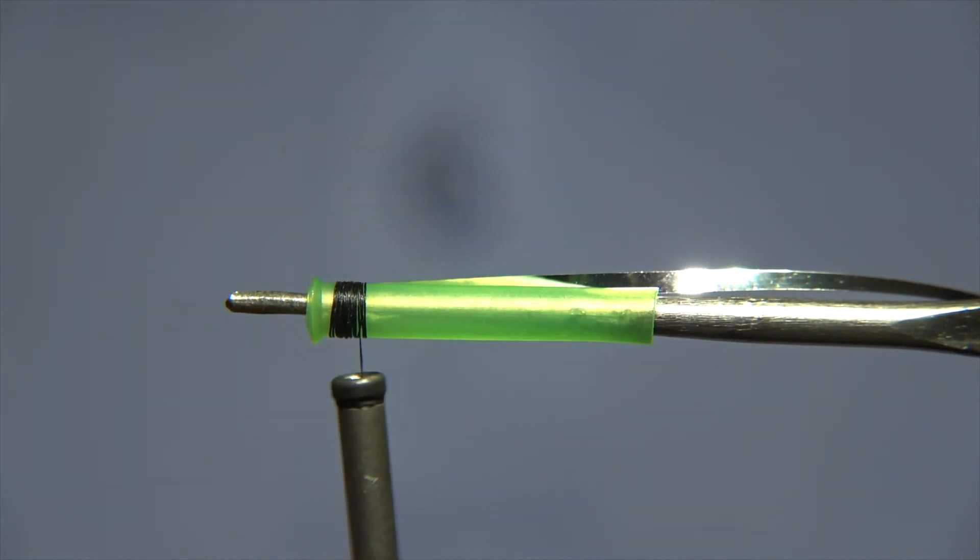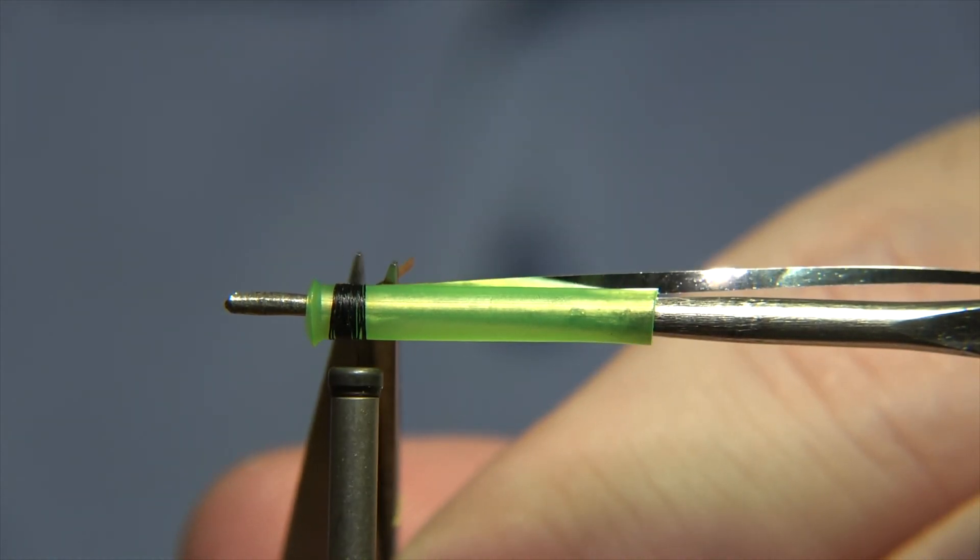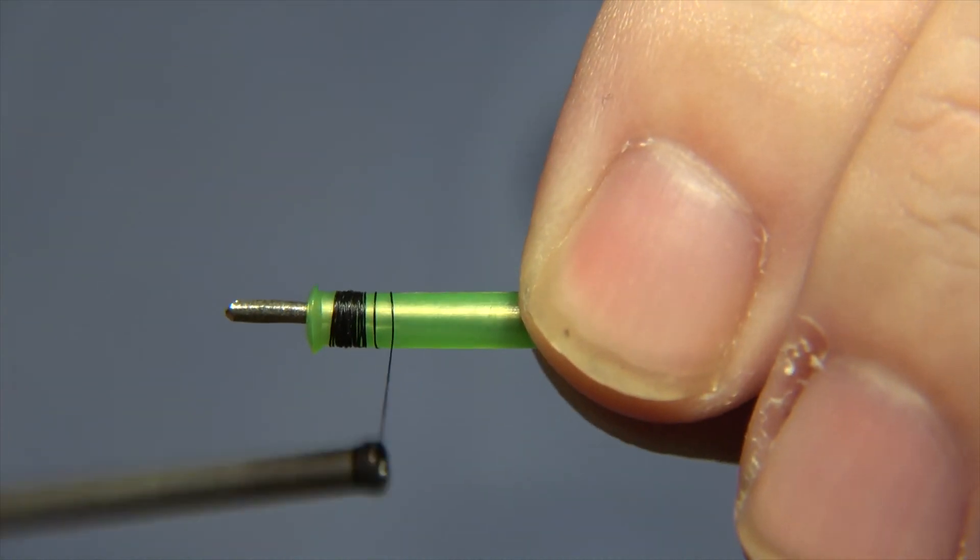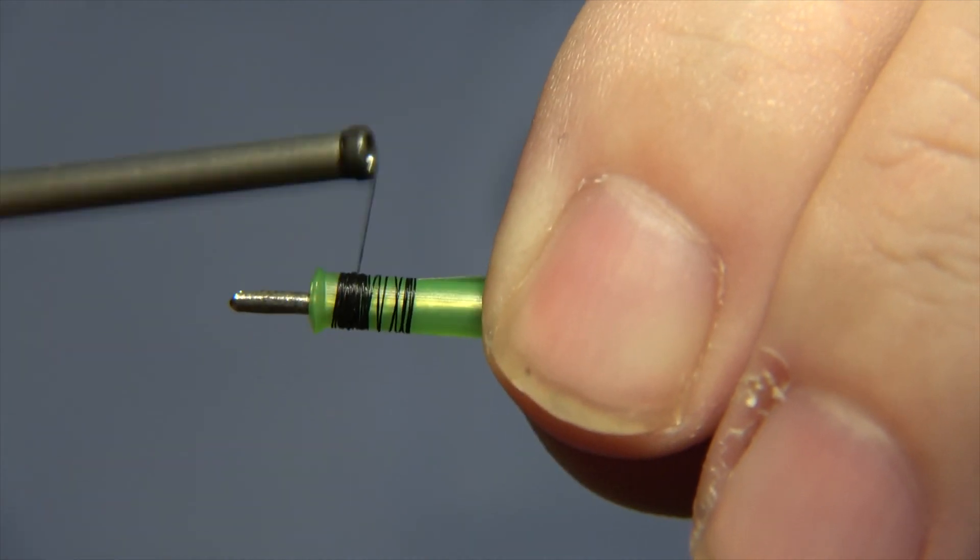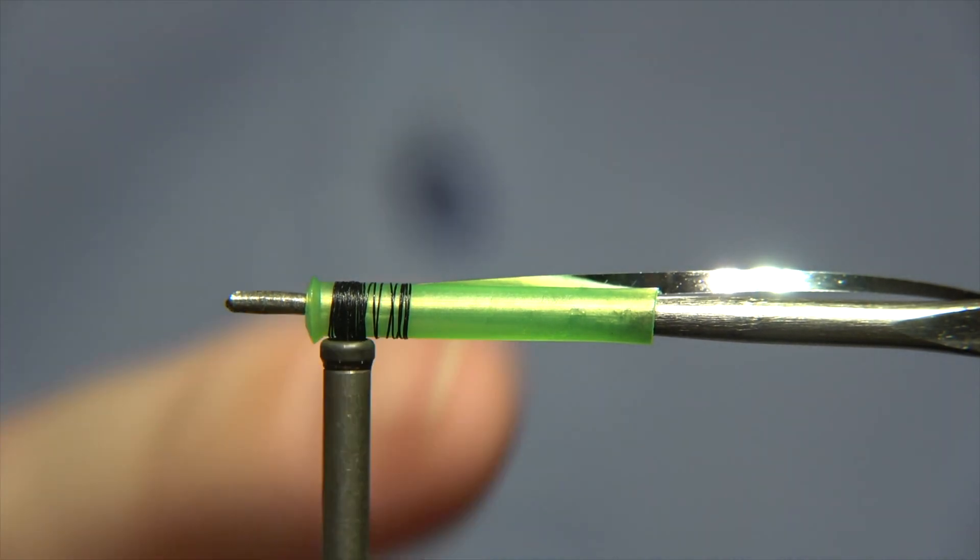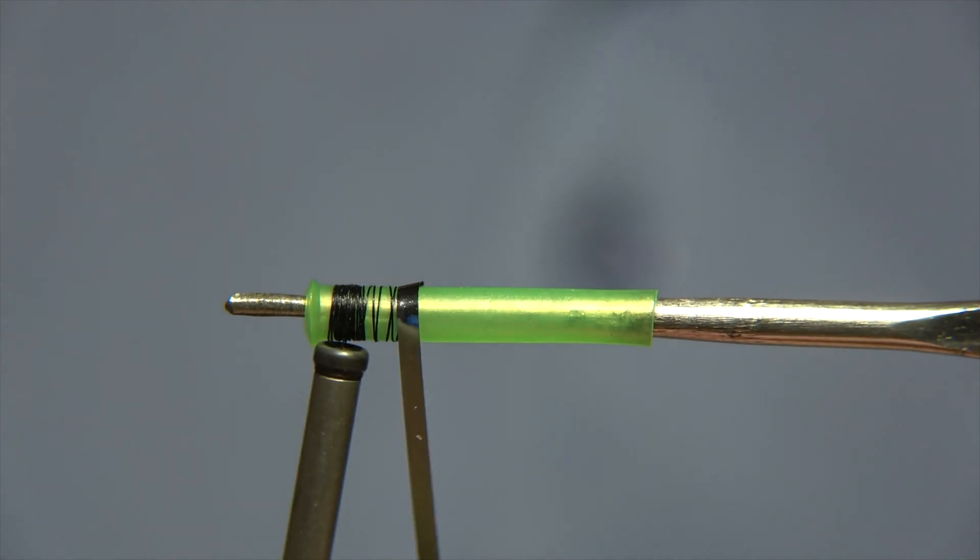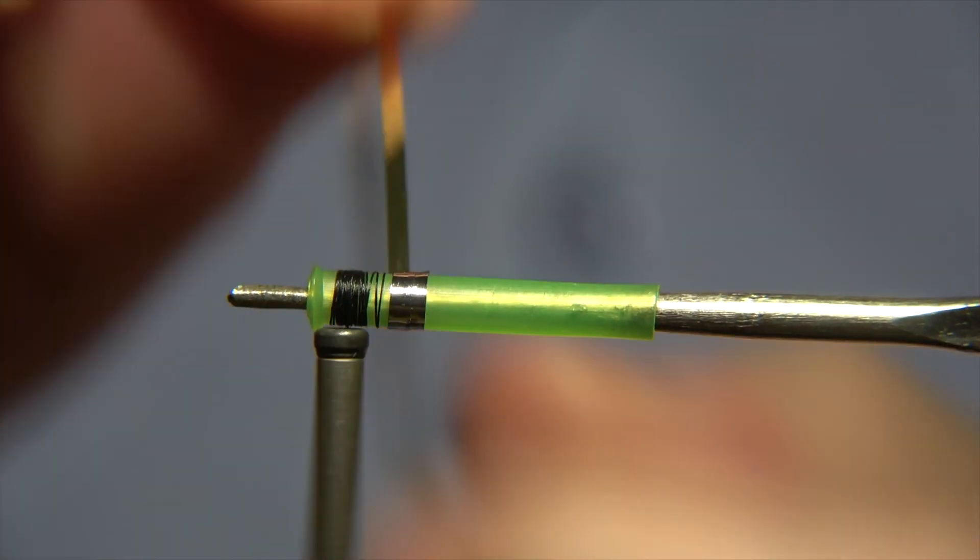Since it's a hitch tube we must not go all the way back with the silver, just like this, not further back, so it just has like a hint of silver. Then we'll be wrapping the silver forward towards the head of the fly.